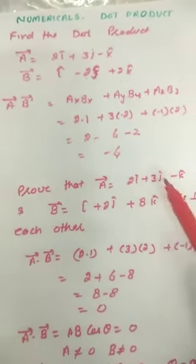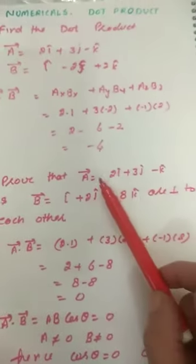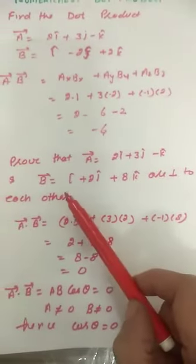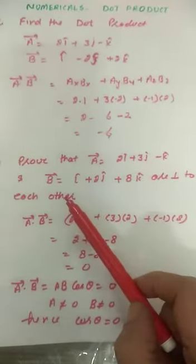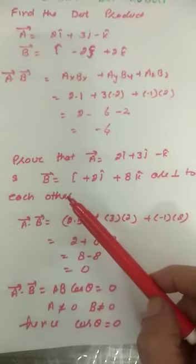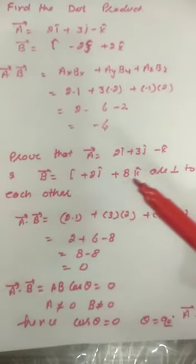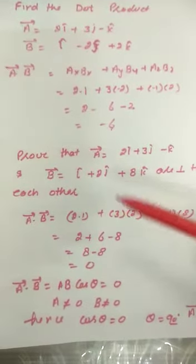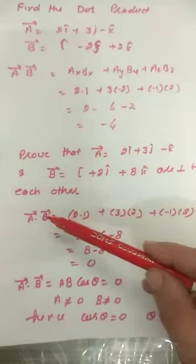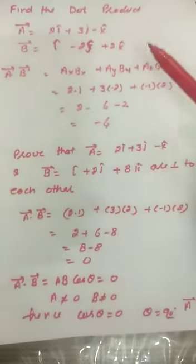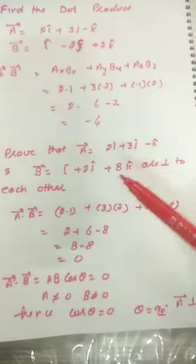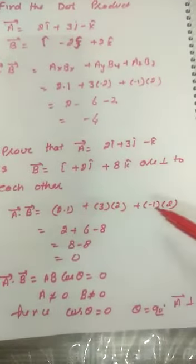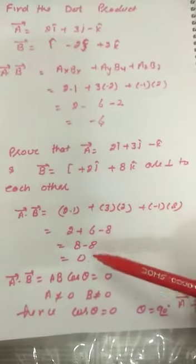Now the second numerical: if we have to prove that vector a and vector b are perpendicular to each other. We know that if the vectors are perpendicular, the dot product is always 0. That's why we find its dot product using the same formula ax·bx plus ay·by plus az·bz, and it comes out to be 0.